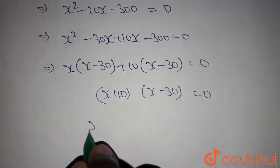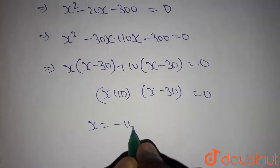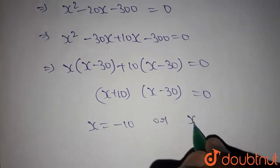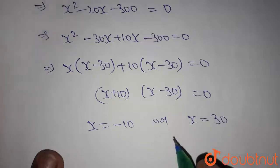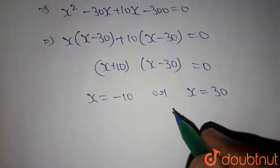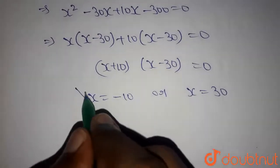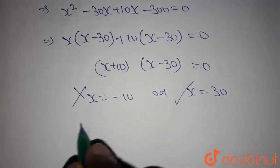According to it, x equals minus 10 or x equals 30. Since we have considered x as the number of rows, it cannot be negative. So x cannot be minus 10. So value of x is 30.